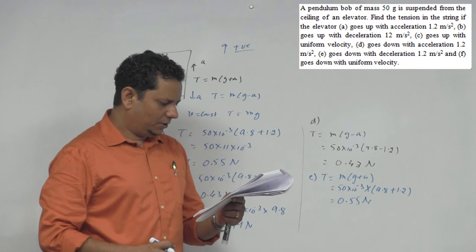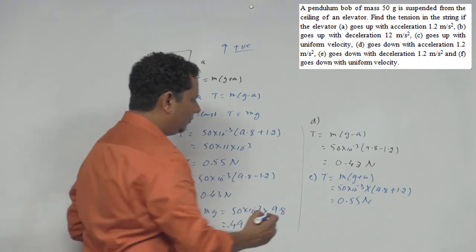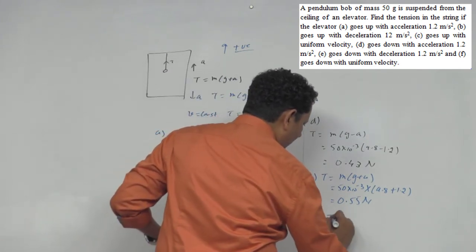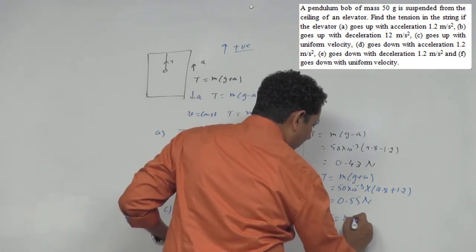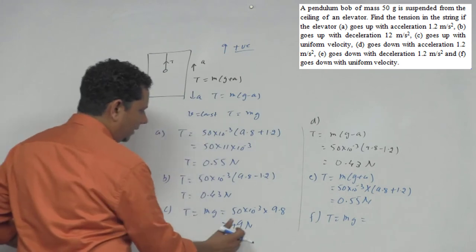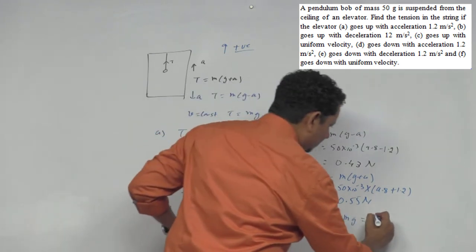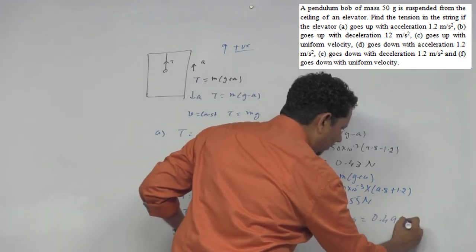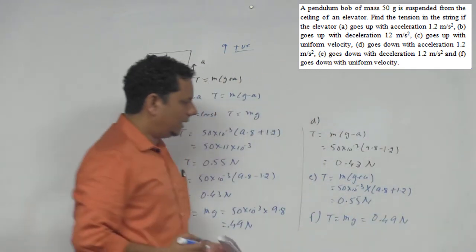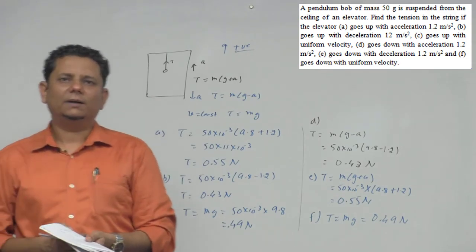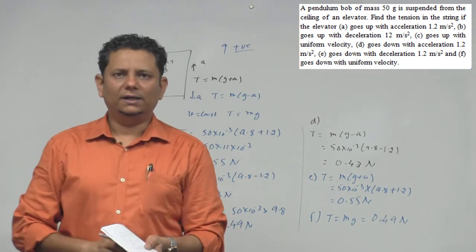Last option है, goes down with uniform velocity. तो आपका tension की value होएगी mg, already ये calculated है, so this will be equal to 0.49 Newton. So ये आपके सारे scenarios हमने यहाँ cover कर लिए हैं।